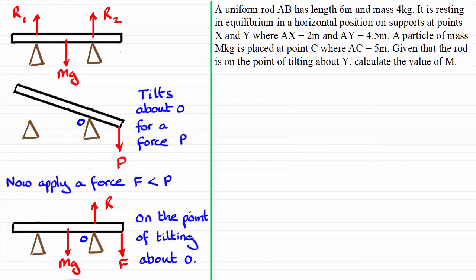OK, welcome back then if you had a go. So what I need to do is a diagram and we've got a uniform rod AB, has a length of six metres and a mass of four kilograms. So I've got my rod here, AB. It's got its weight, 4G Newtons acting in the middle. So it's going to be three metres in from either end.